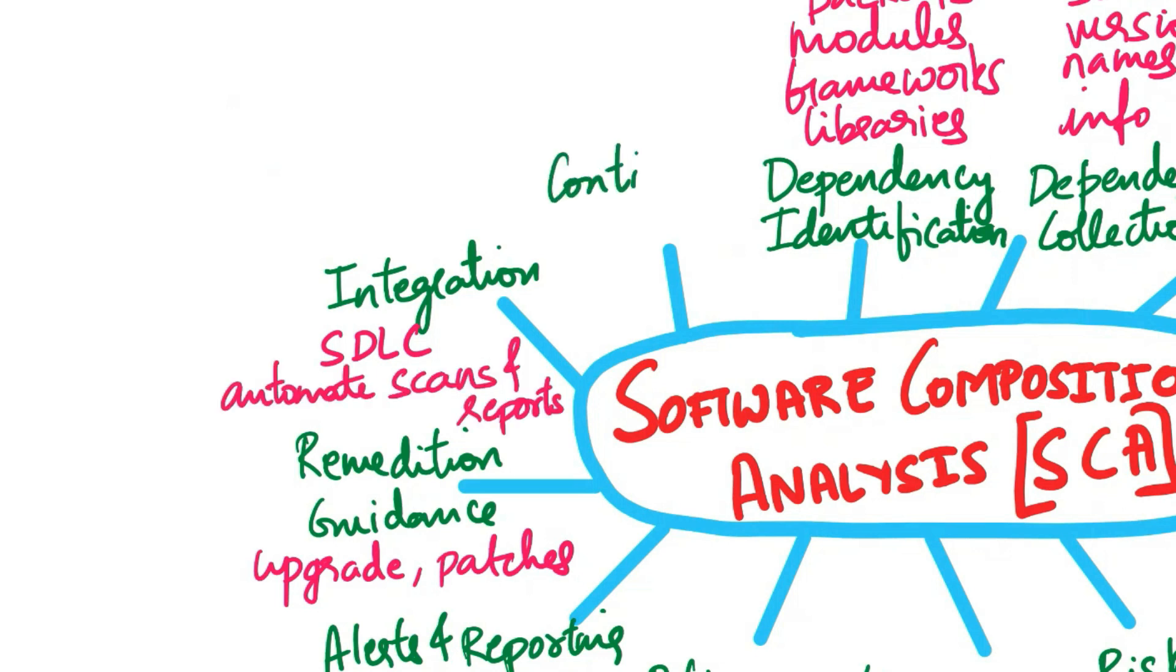Next is continuous monitoring. SCA is an ongoing process as new vulnerabilities are discovered over time. Continuous monitoring and periodic scans are essential to keep software dependencies secure and compliant.